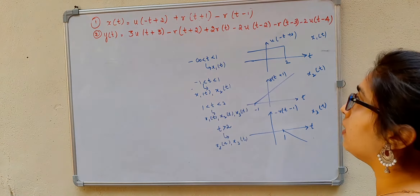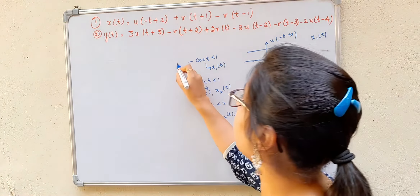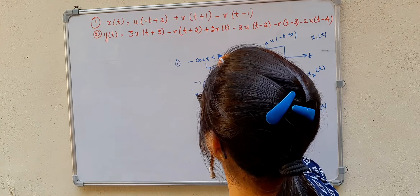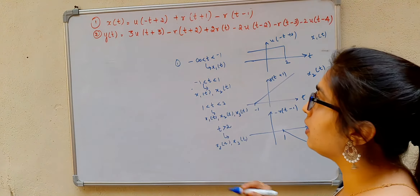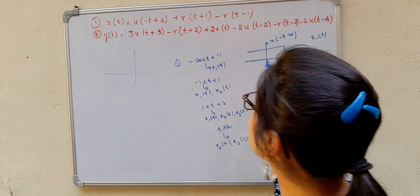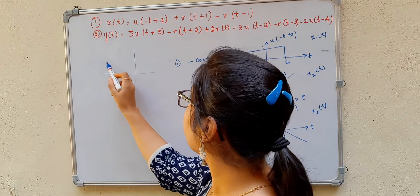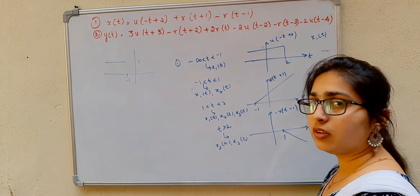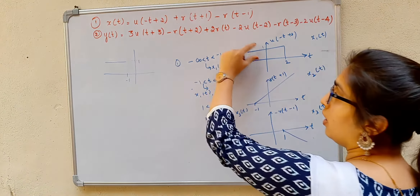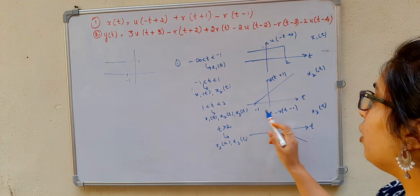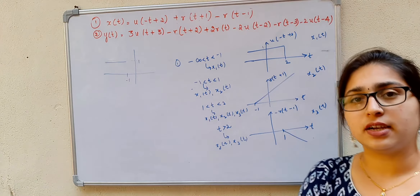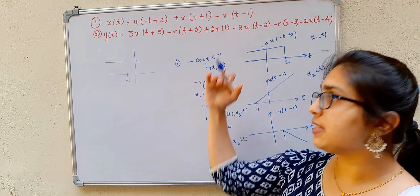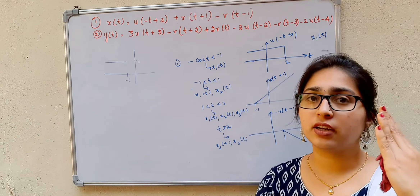So let us sketch x(t). First interval: minus infinity to minus 1. We have only the first signal, which is a constant signal having a step height of 1. So it is a horizontal line at 1. Now from minus 1 to 1, you get an increasing ramp — a ramp with a positive slope. When you add a constant with an increasing ramp, you get an increasing ramp that is shifted upwards — a vertical shift.